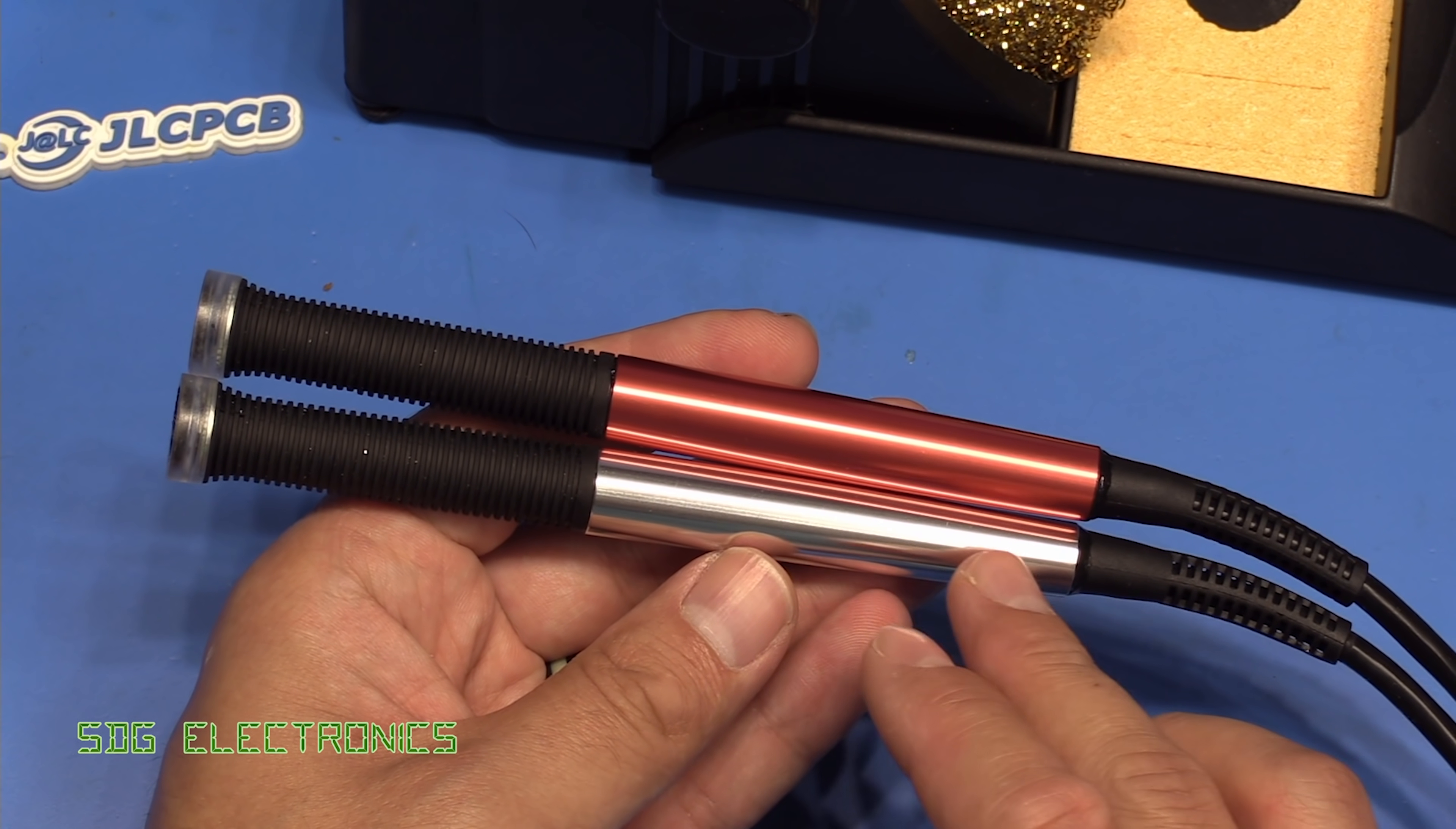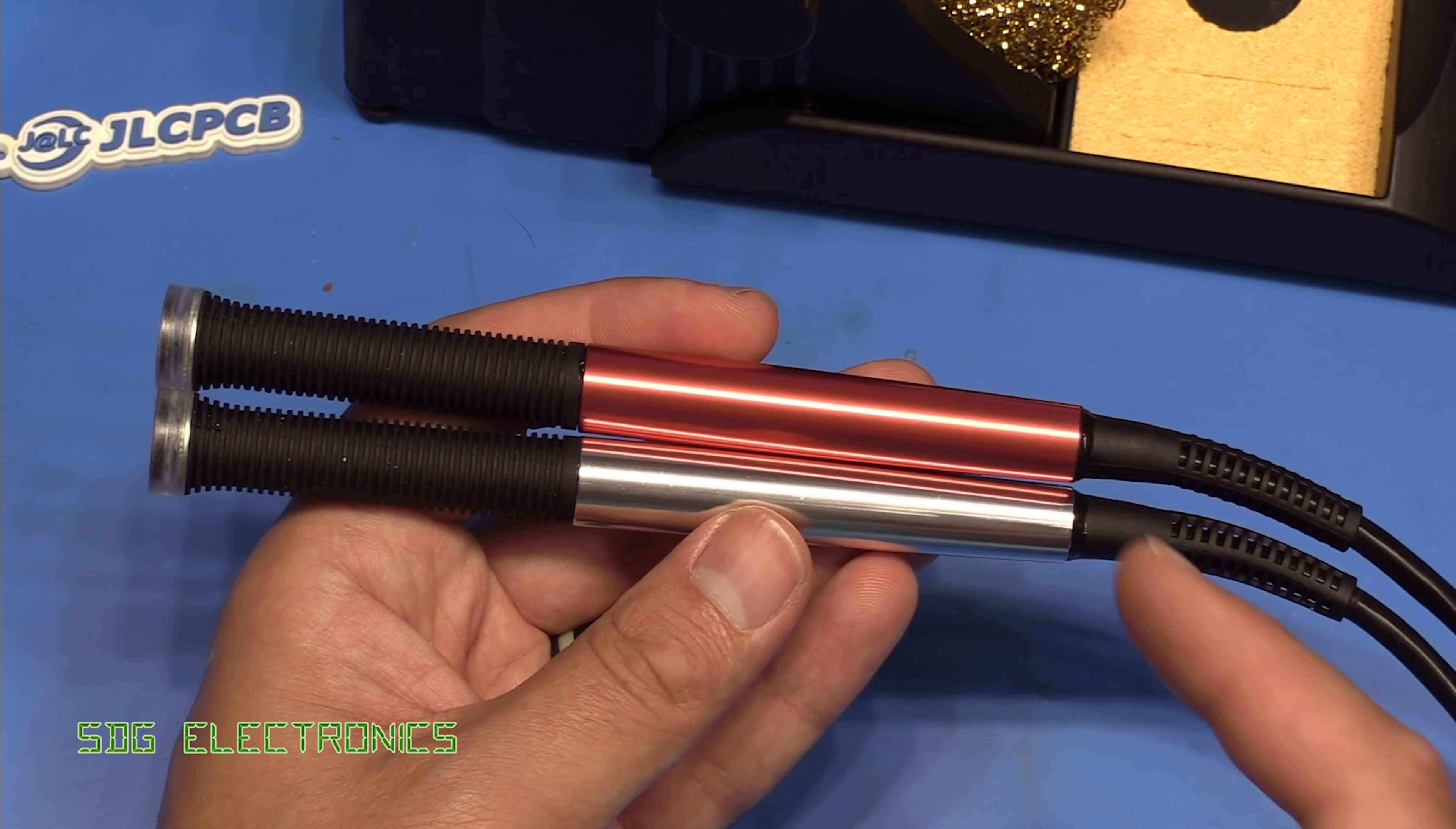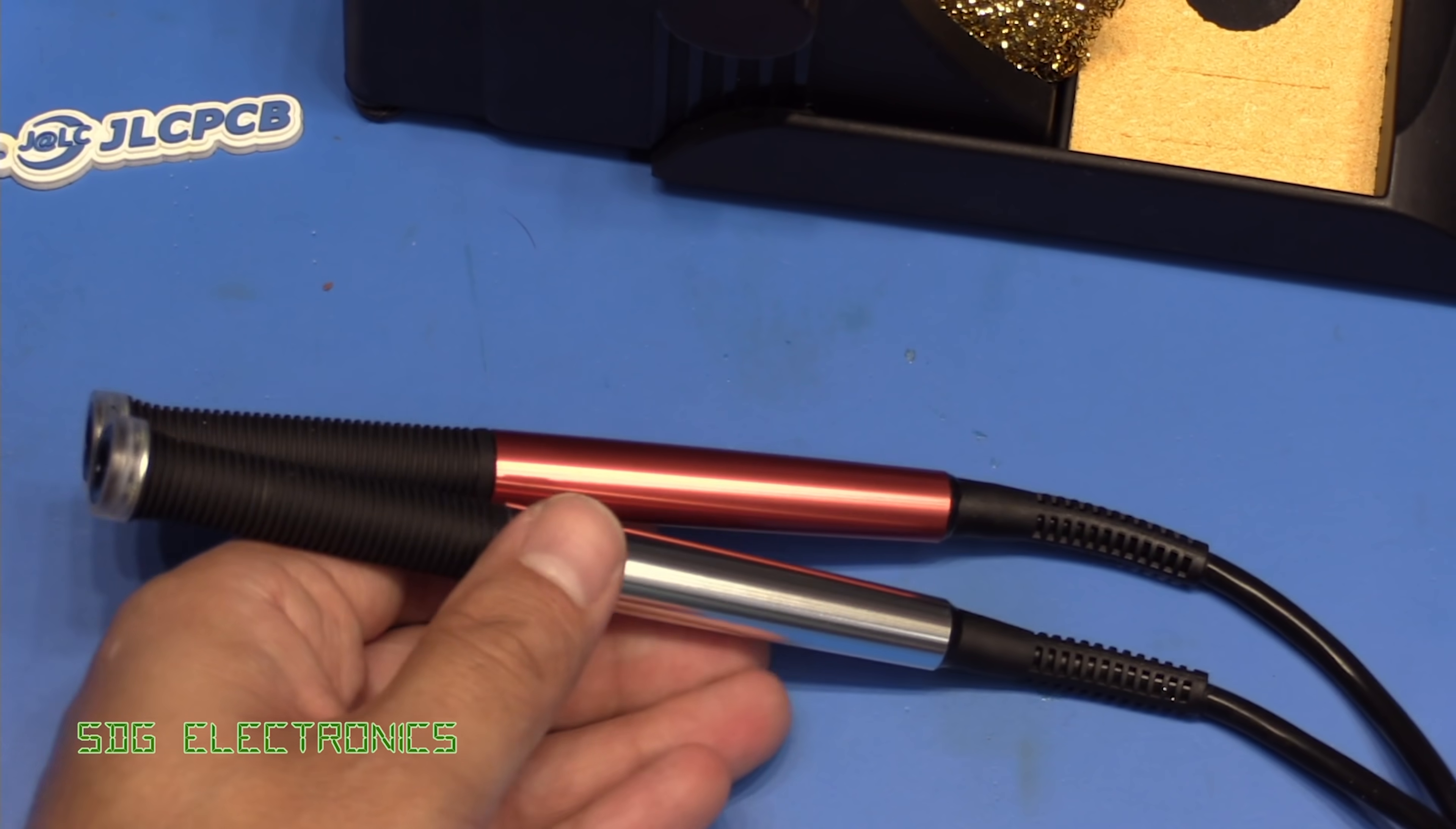If we compare the standard connection validation handpiece with the high thermal demand handpiece you can see that they're essentially identical. I can't see any difference in terms of dimensions or anything like that, the only difference is the high thermal demand one is coloured red. There's no difference at this end. The cables appear to be exactly the same.